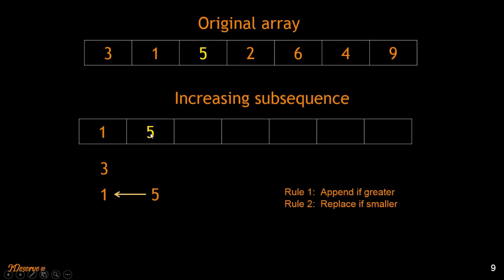Two is the next element. Is two greater than five? No — rule two applies. We find a place for two: it is greater than one and less than five, so we replace five with two. Why do we replace? Imagine a subsequence starting at two versus one starting at five — the one starting at two will be longer because starting at five means missing numbers like three and four that might appear later. So we ditch five and use two. Since two comes after one, we keep a parent pointer from two to one.